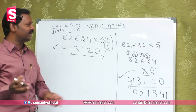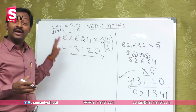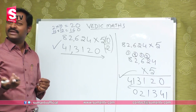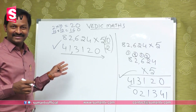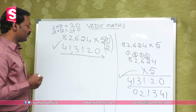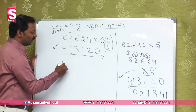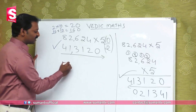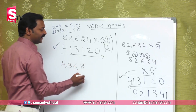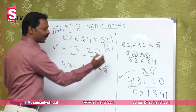This is the difference between regular maths and Vedic Maths. You do not need to do rough work or refer to a table. Now let us take another example: 4,36,848 multiplied by 5.